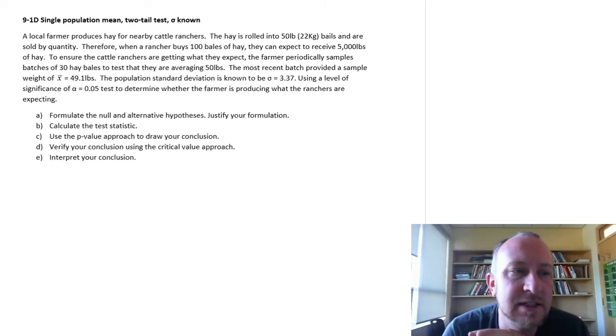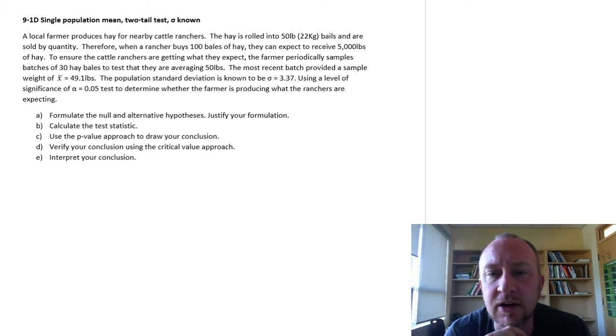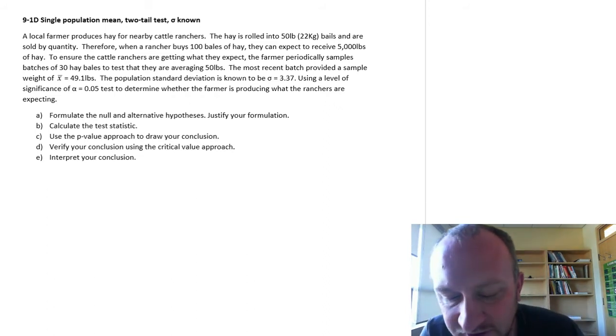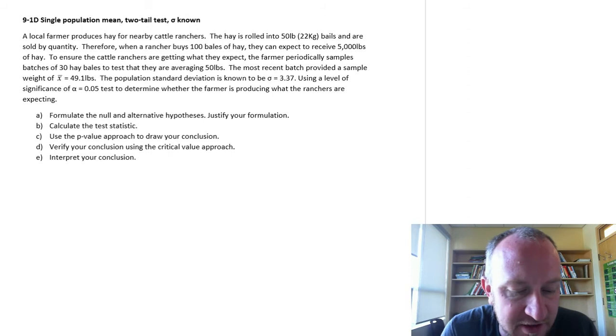Hello and welcome back to this yet another two-tailed hypothesis test on a single population mean. So this one we're going to look at farmers producing hay for nearby cattle ranchers. The hay is rolled into 50 pound bales and are sold by quantity.